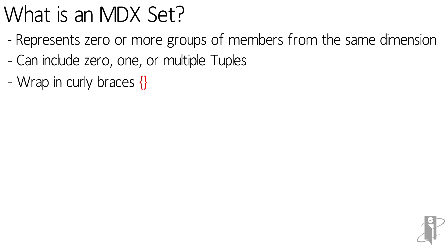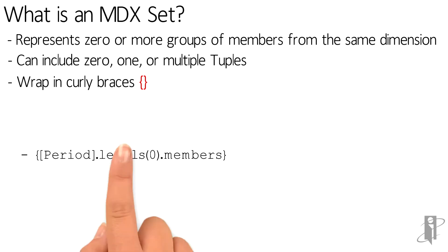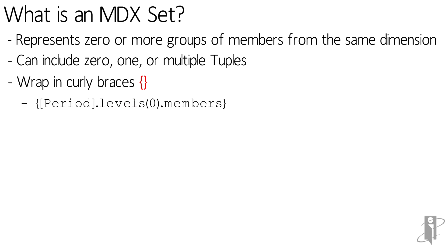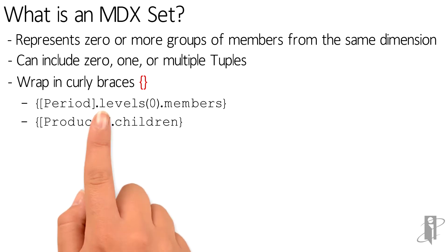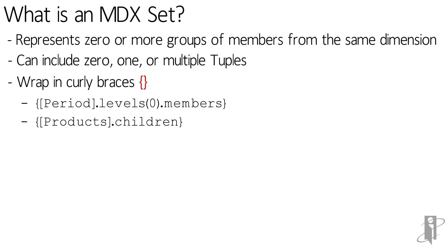The syntax for a set uses curly braces. For example, Period.Level0.Members would return all of the periods in our dimension — so January through December — or Products.Children would return the list of children, giving you multiple members.